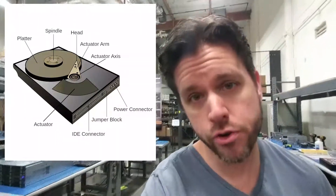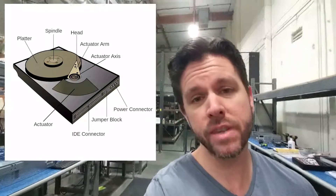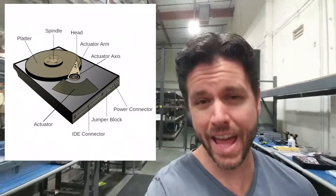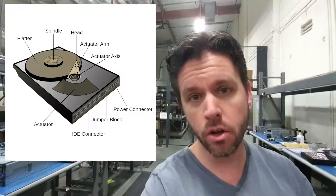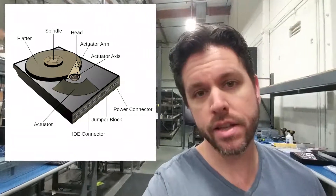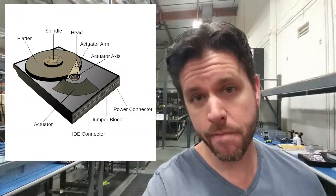If you look at a traditional hard drive, they have something called an actuator arm and a head. What that is, is a physical piece moving across the spindle, actually reading the data that you're trying to get from that drive. Now when you have a single user reading from that hard drive, it's pretty simple. Maybe the drive's fragmented and it's hopping around a little, or maybe all of the data is in one spot and that head can just sit and read.